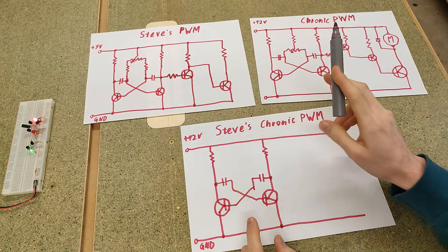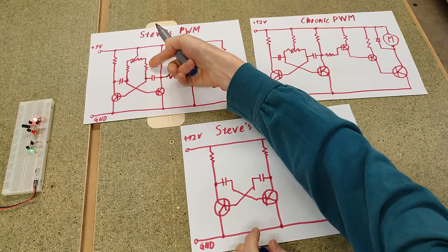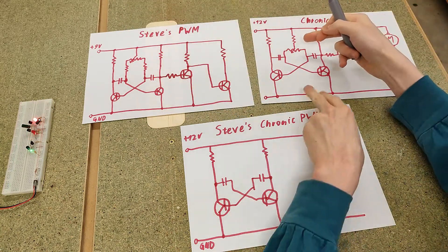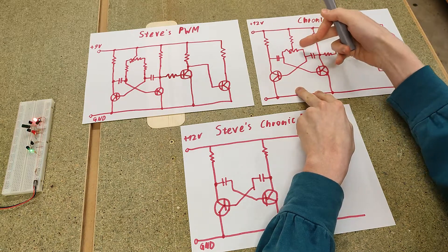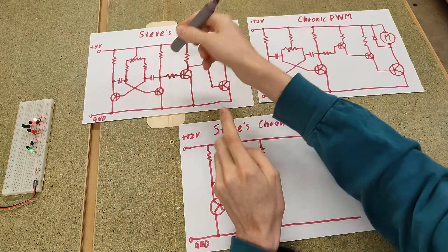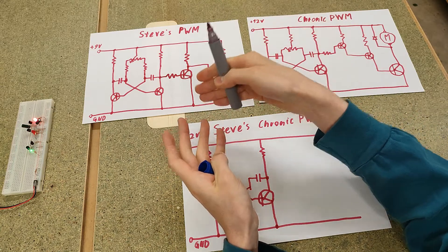Now for the potentiometer, this is where things start to diverge already. Whereas Steve used two resistors down here and put the potentiometer on top, I actually put the resistor up top and the potentiometer down here. What I think is an issue with Steve's design is that it never goes down all the way to 0% duty cycle.